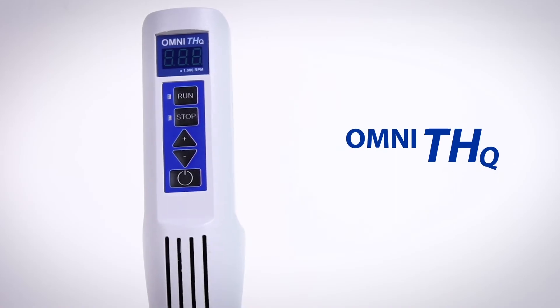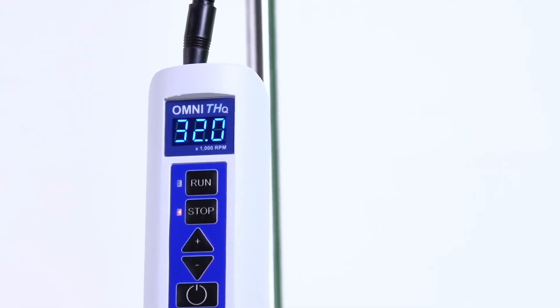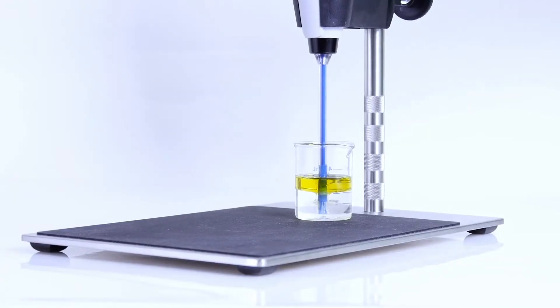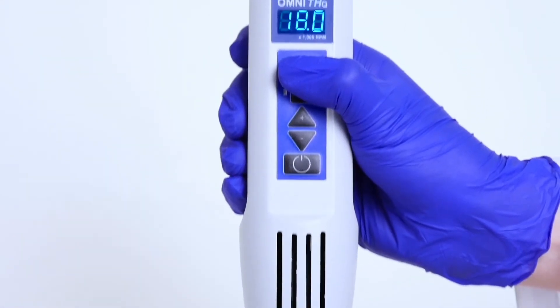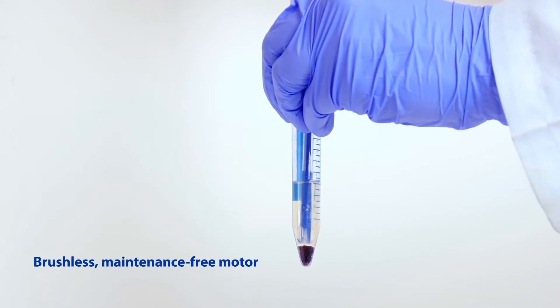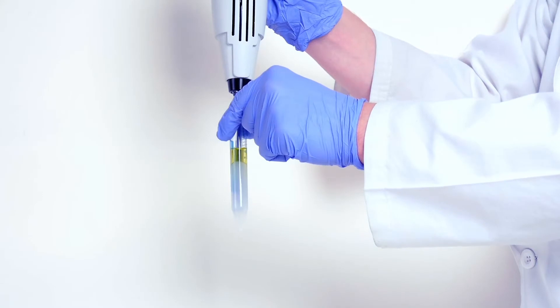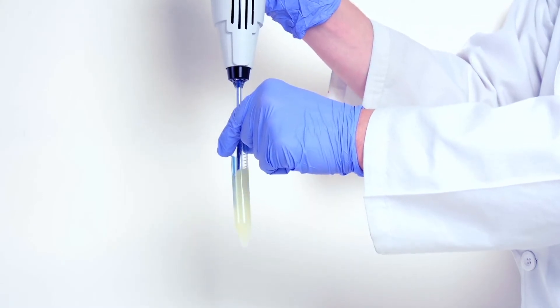The Omni THQ digital tissue homogenizer ensures ultimate repeatability for standardized applications within the lab. The integrated digital controls provide accurate results for each cycle and the brushless, maintenance-free motor incorporates constant speed feedback, enabling it to maintain a set speed throughout sample processing.